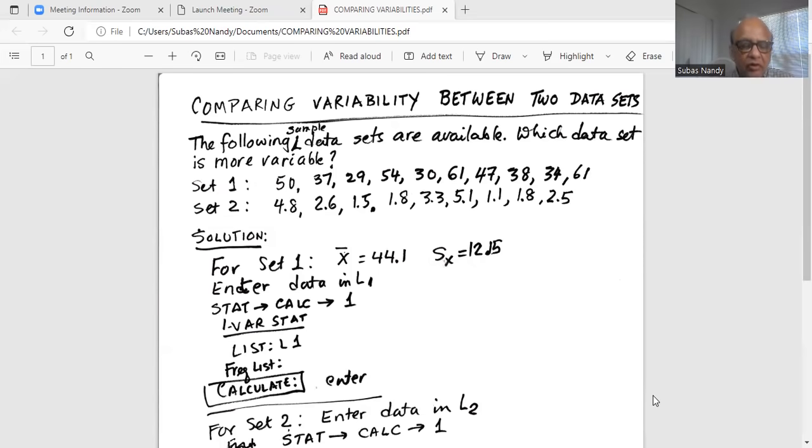We repeat the procedure for sample two. So we go stat, press the stat button, then number one, and we go to the first line in L2 by the right cursor key where we will enter data from set two. 4.8, 2.6, 1.5.